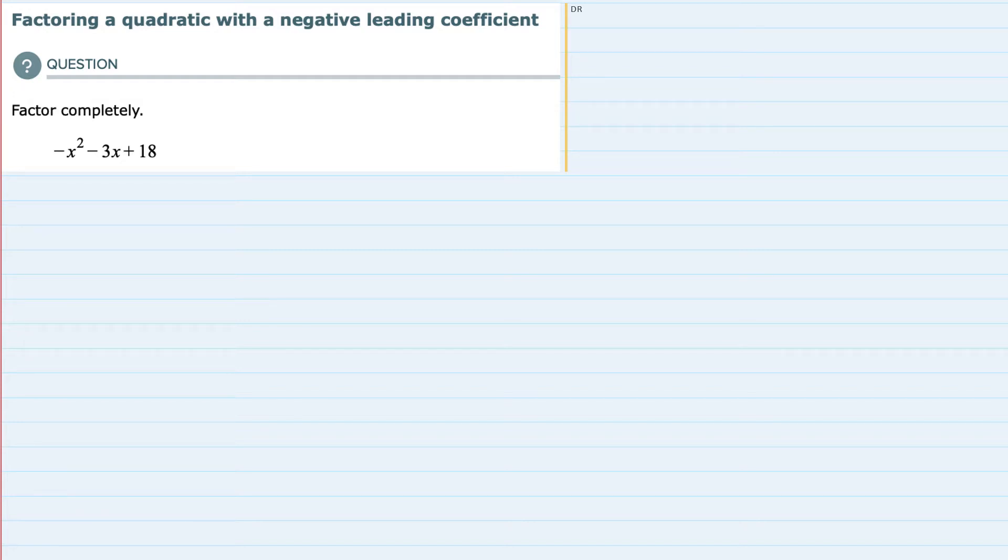We're asked to factor completely -x² - 3x + 18. And from the name of this problem type, we can tell that it does actually have a negative leading coefficient.